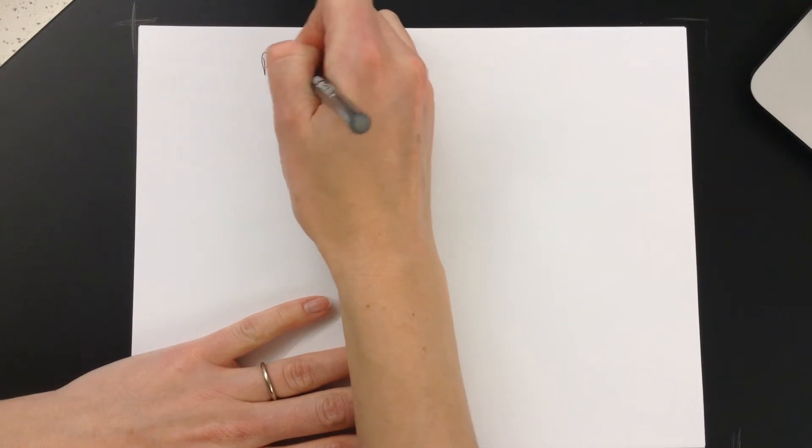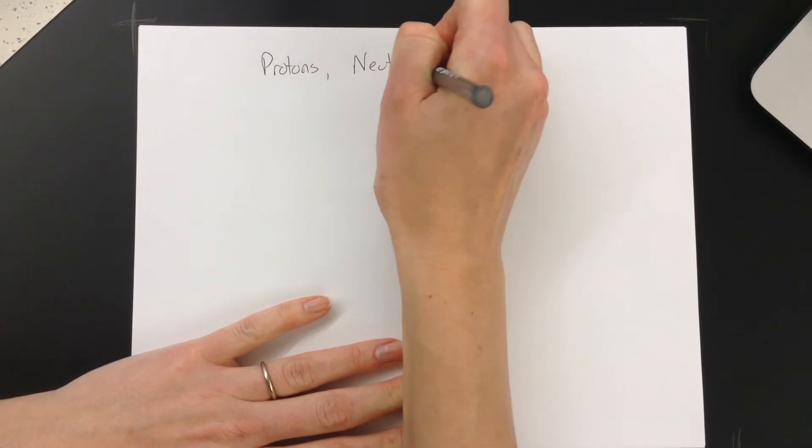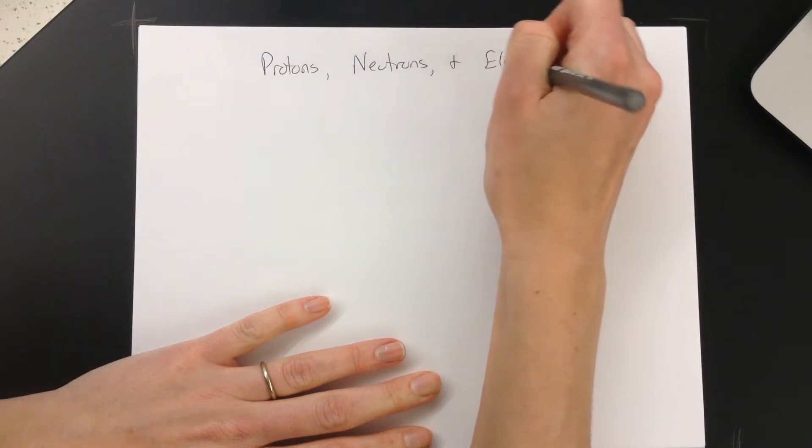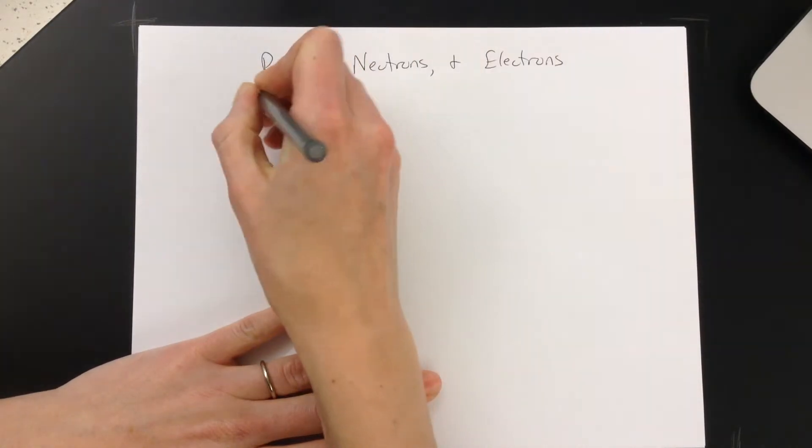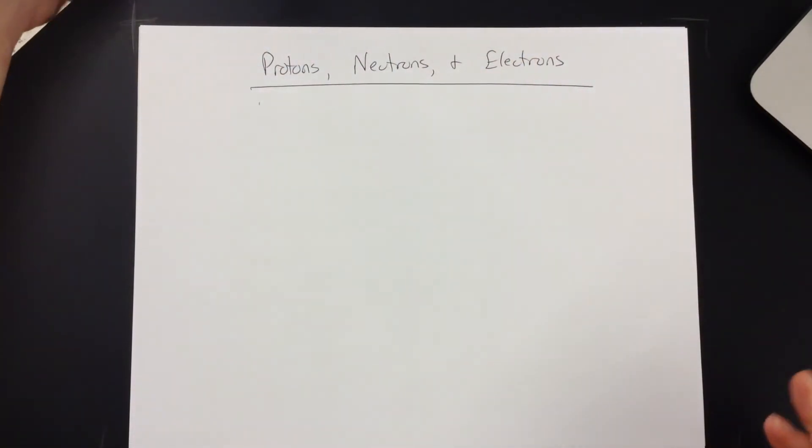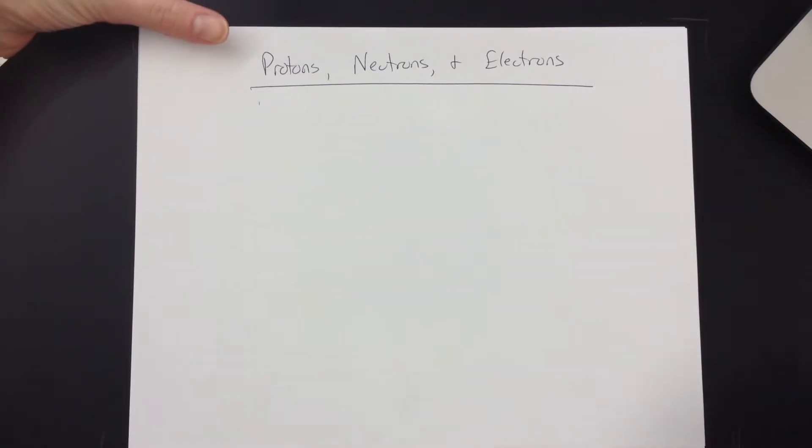Alright, so protons, neutrons, and electrons. What you need to know, there's three things that you need to know. You need to know what numbers should be the same, and then how do you get the rest of the numbers that you don't have.